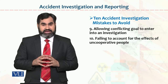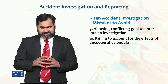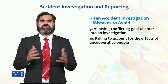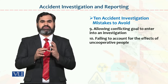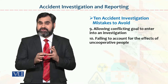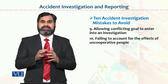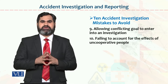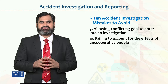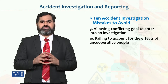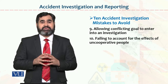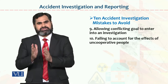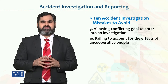Ten point hai: failing to account for the effects of uncooperative people. Baaz auqaat cooperative loog nahi hote, uncooperative loog hote hain. Uncooperative ka matlab hai ke jo information aap ko chahiye, jitni information chahiye, jitna time chahiye, ya jis hatte ki information required hai — woh jo loog aapke department ke hain woh utni information aapko provide nahi kar rahe. Isko hum kehte hain uncooperative people. Uncooperative people ki wajah se bhi baaz auqaat aapki accident ki investigation aur accident ki reporting accurate way mein perform nahi hoti.